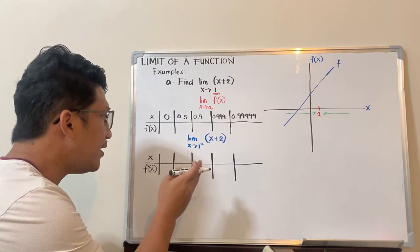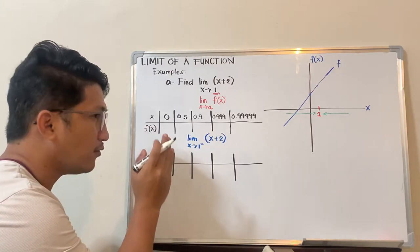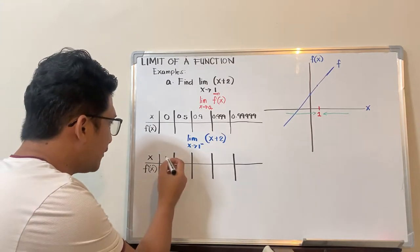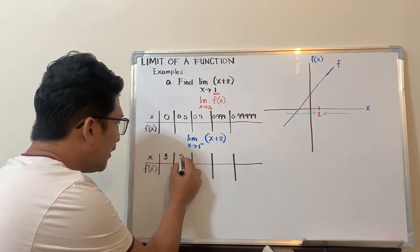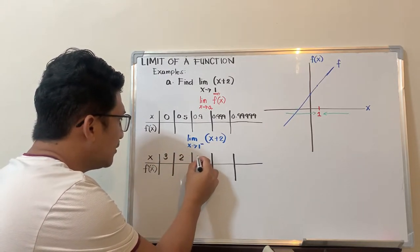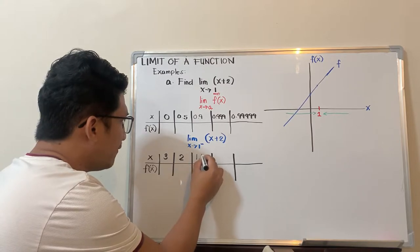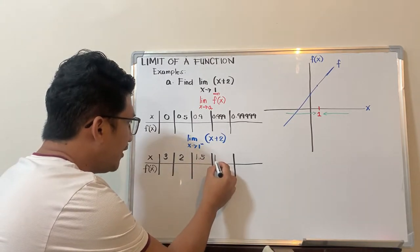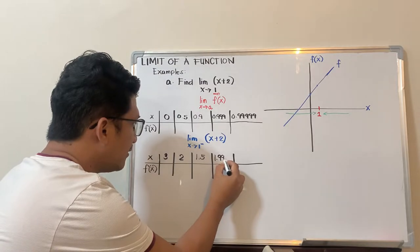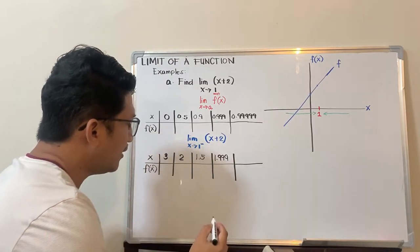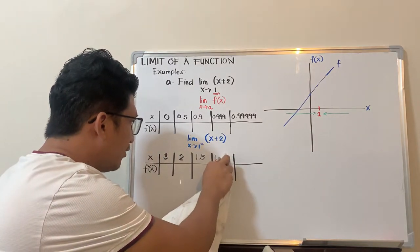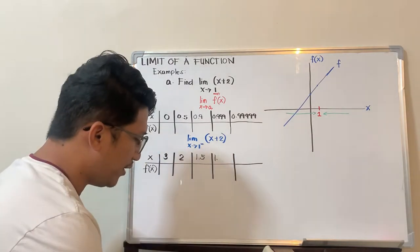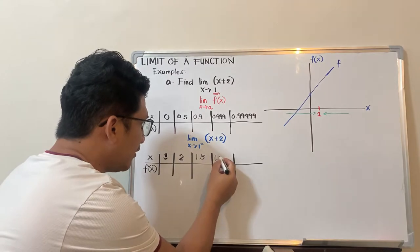If you start with 3, then 2, then let's say 1.5, then 1.001. Wait, sorry—it should be closer to 1, so that should be 1.001.